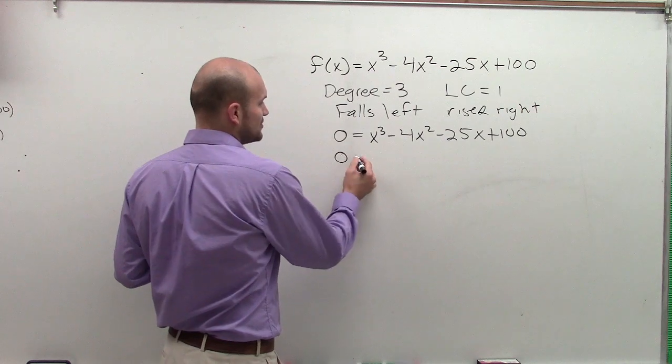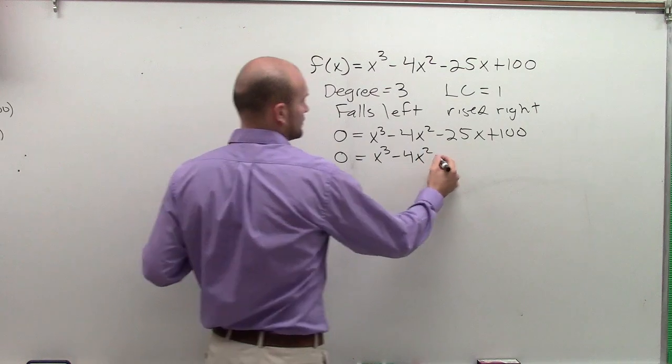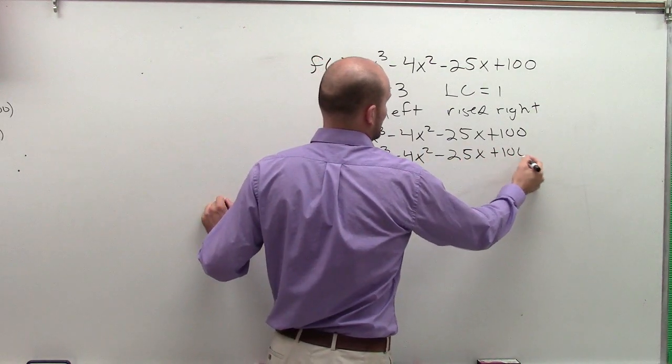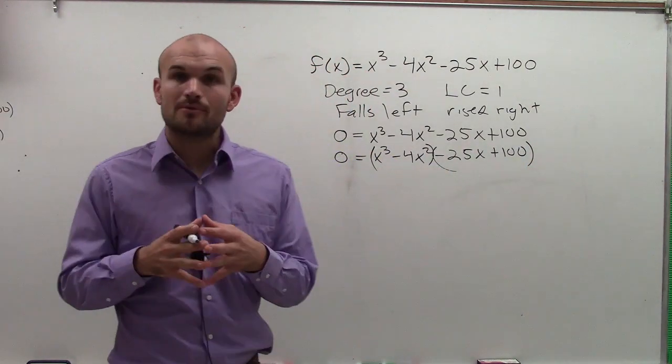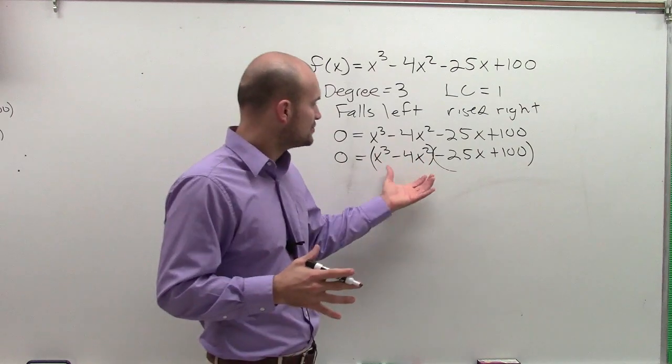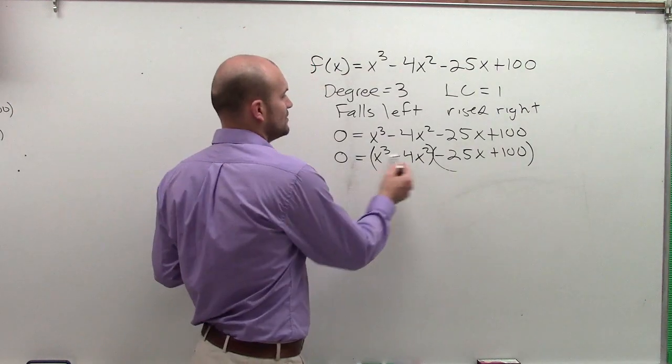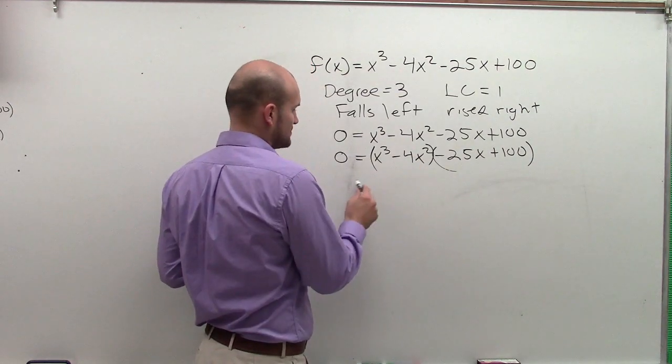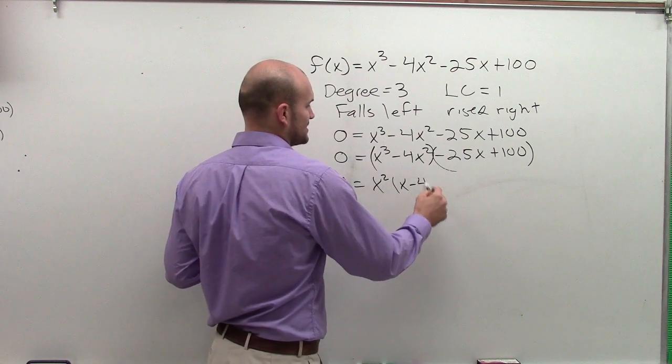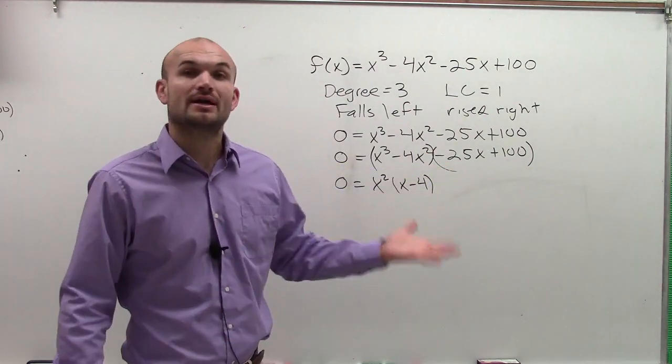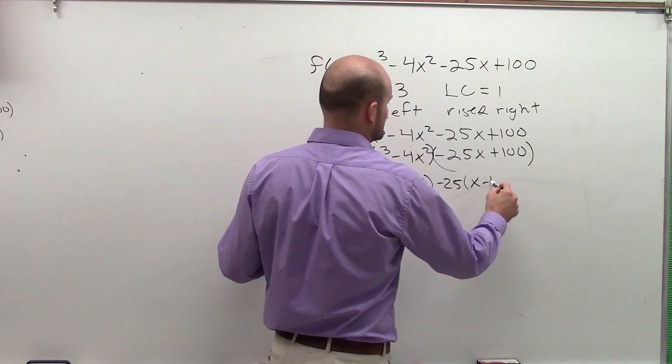So that's what I'm going to do. What I'm going to do is I'm going to split up my first two terms and my last two terms. I'm just going to put parentheses around them. Then when factor by grouping, what you do is you just split your polynomial up and you factor each group individually. So what can I factor out of my first two terms? Well, I can factor out an x squared. So I have x squared times x minus 4. Then I look at my second group and I can factor out a negative 25, and that leaves me with an x minus 4.